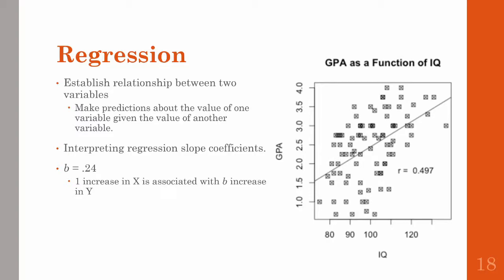With regressions, you get out a slope coefficient that's used to calculate predictions. For instance, if the slope coefficient between IQ as the predictor variable and GPA as the outcome variable is 0.24, that would mean that for every one-point increase in IQ, that's associated with a 0.24 increase in GPA. In future videos, we'll go over how to calculate things like regression coefficients and partial correlations, but for now this is a good overview of non-experimental research strategies.